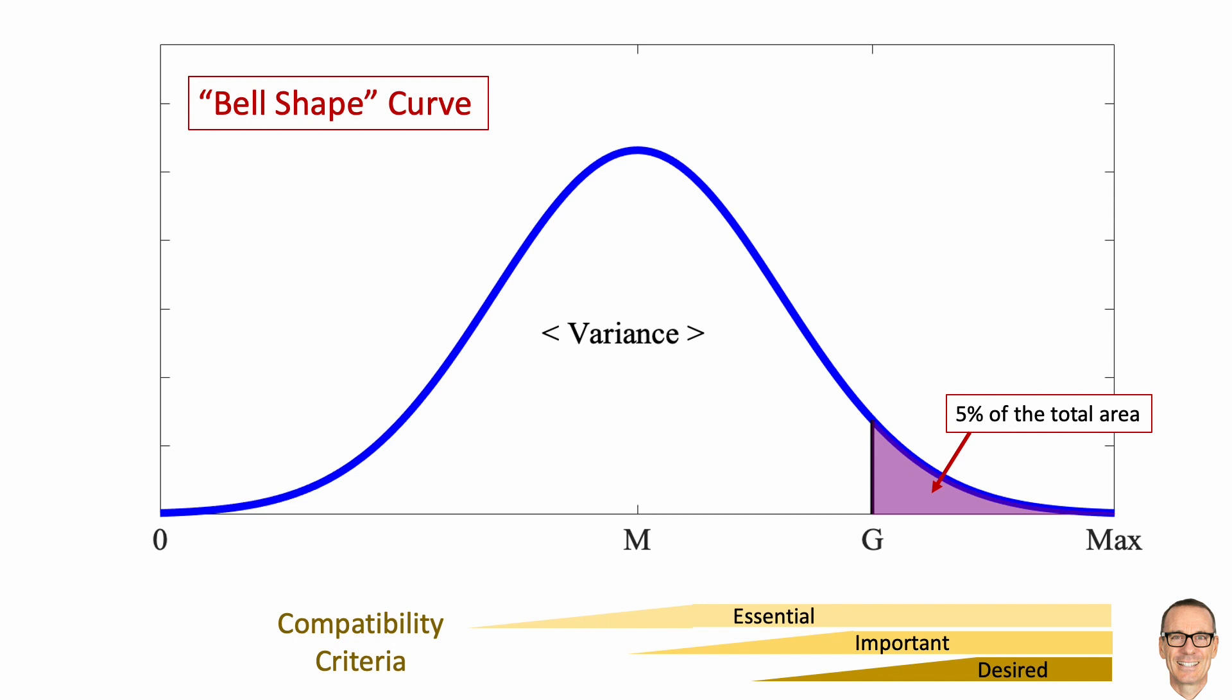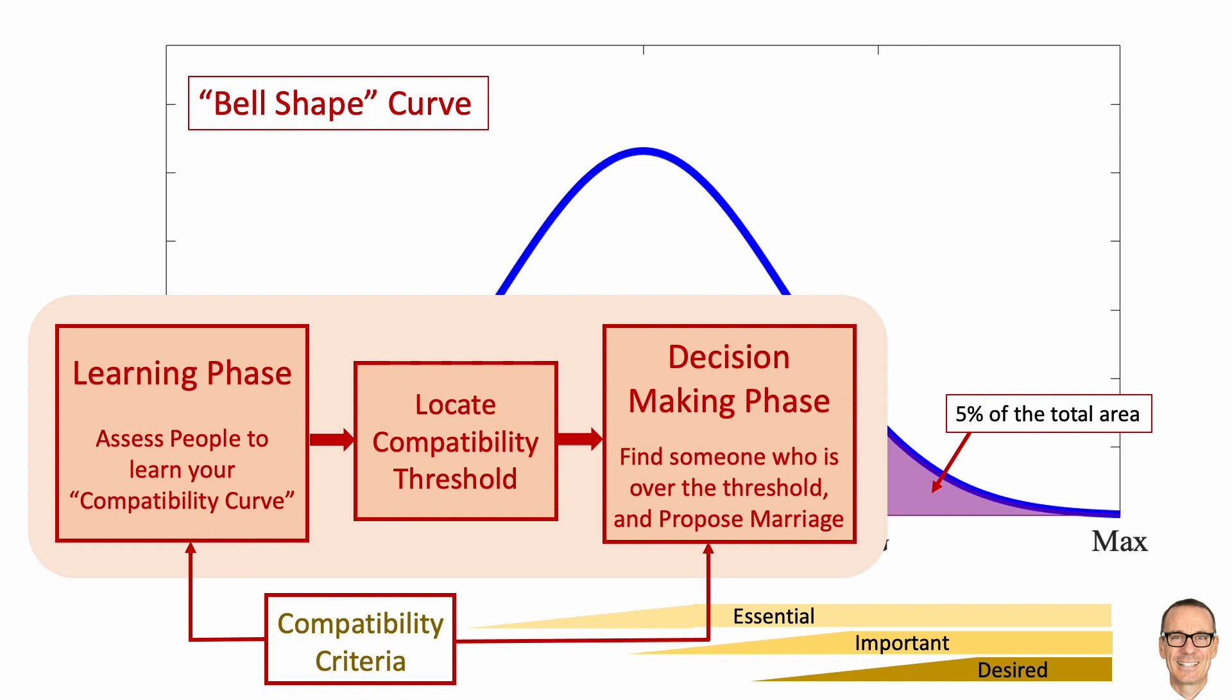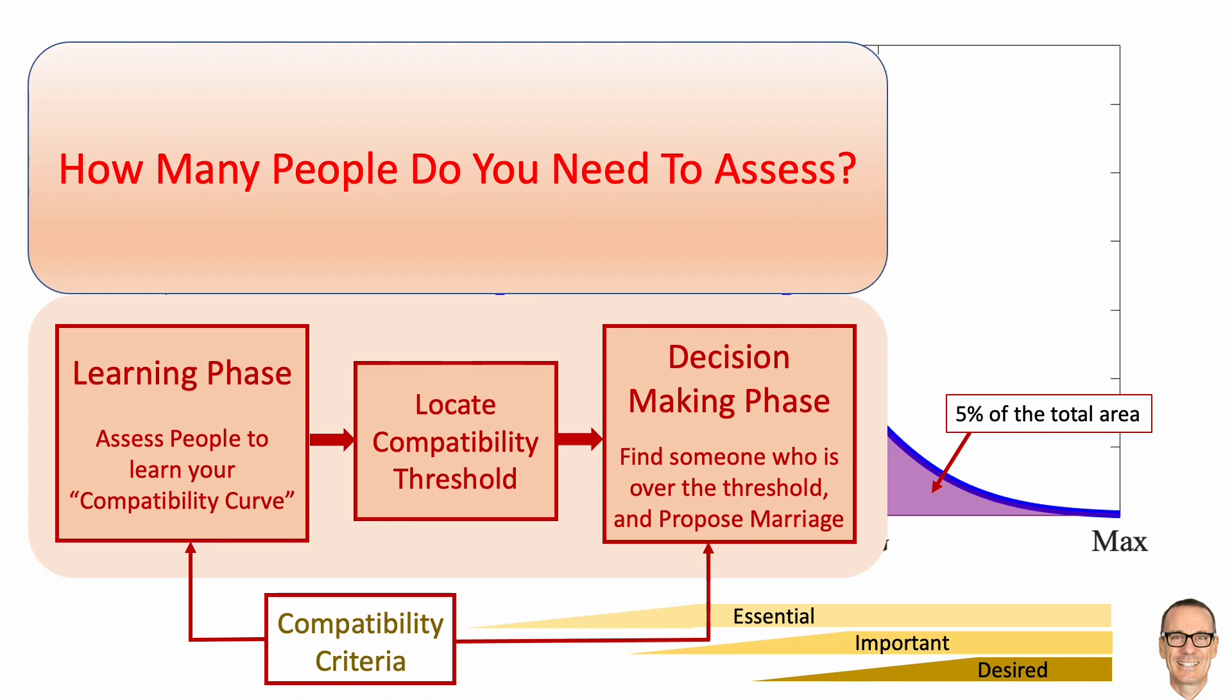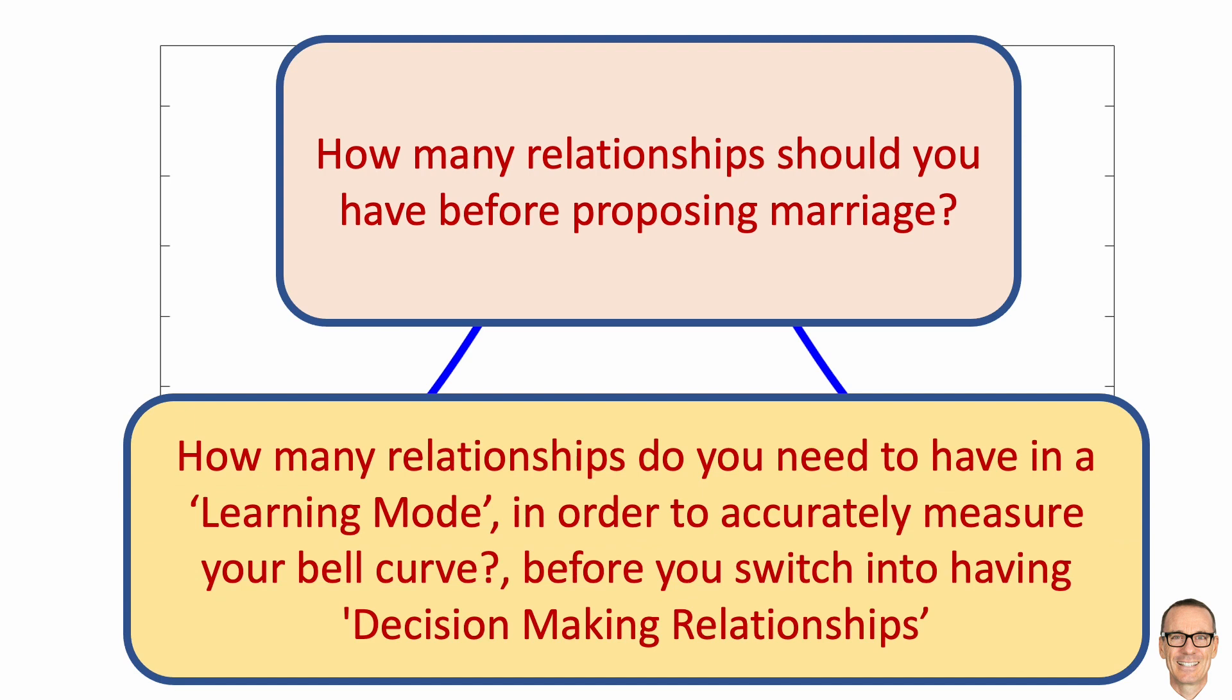So how do you go about learning the parameters of this curve? Well, you need to start assessing people for compatibility against your personal criteria. And you'll need to do this learning phase before you'll be able to locate your top 5% compatibility threshold and then switch into a decision-making phase or a marriage proposal phase. And this poses a big question. How many people do you need to assess? Or perhaps a slightly different, but in many ways more important question, how many relationships should you have before proposing marriage? Or to be more mathematical, how many relationships do you need to have in a learning mode in order to accurately measure your bell curve before you switch into having decision-making relationships?